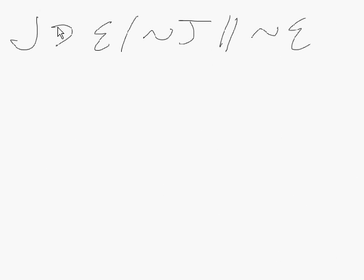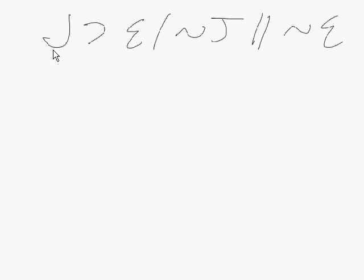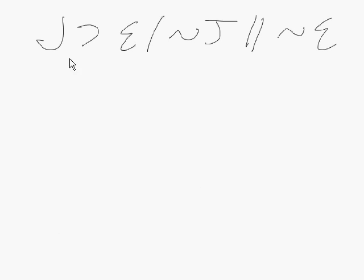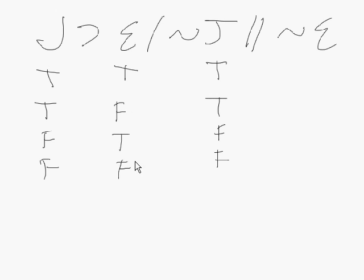Let me go back to our example: J therefore E, not J, therefore not E. The first step, once you translate it, is to figure out how many rows you need. Here we have two variables, so using the equation 2 to the nth power, that's 2 to the second, which equals 4. So we need four lines. We've got J as true, true, false, false, and E as true, false, true, false. And the same values repeat for the negated variables.